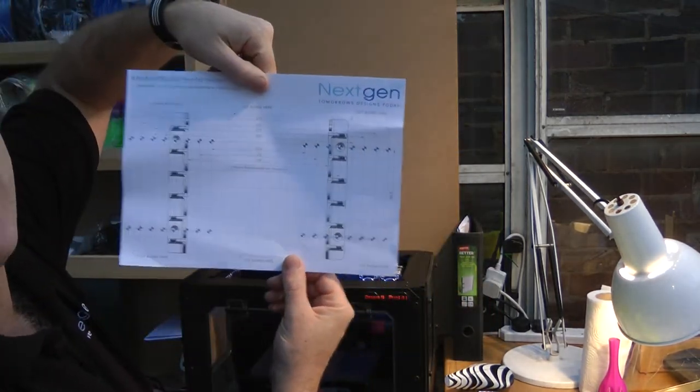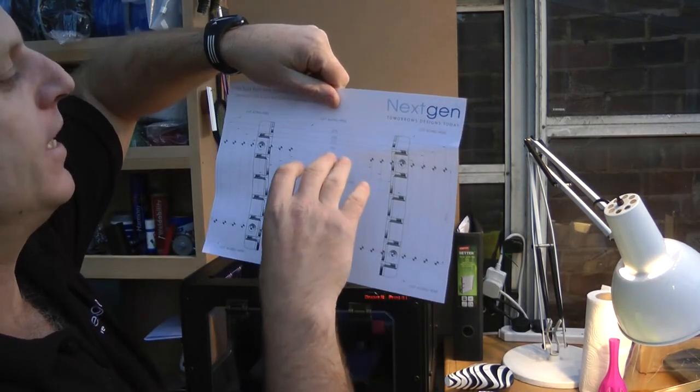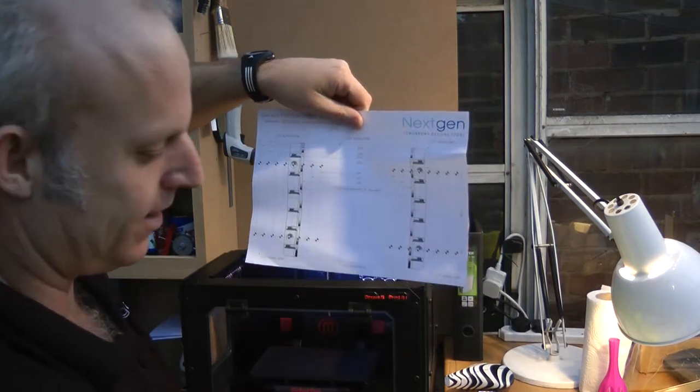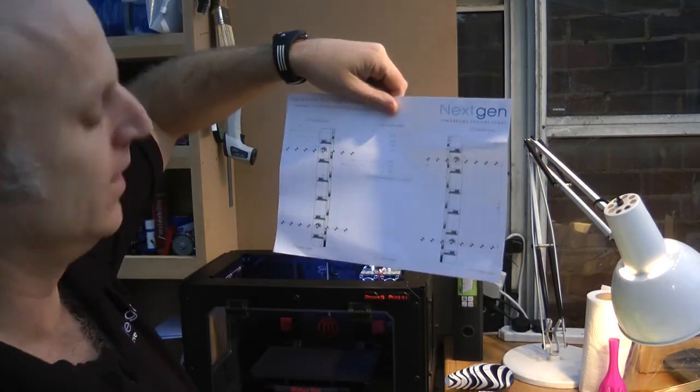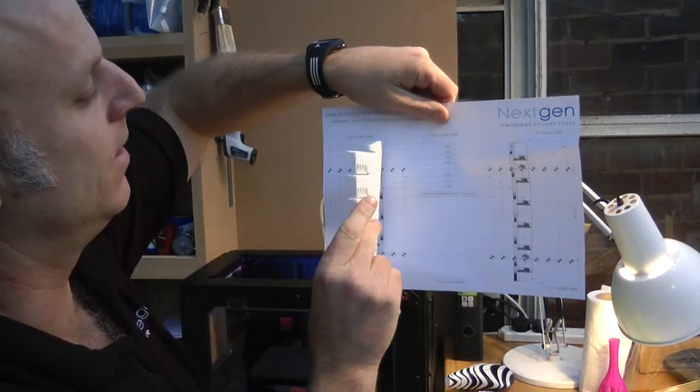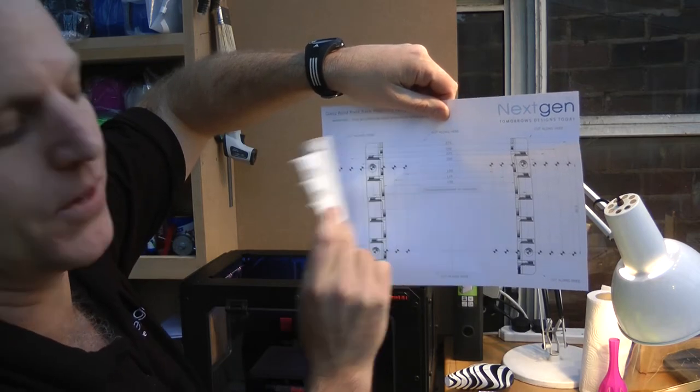So as long as you print this out on A4 paper, don't scale it to fit to paper, make sure you scale it at 100% and then check it. You can either check it once it's printed, and if you've printed these already, just offer one of these up on the right side and it should line up perfectly with the hole centers.